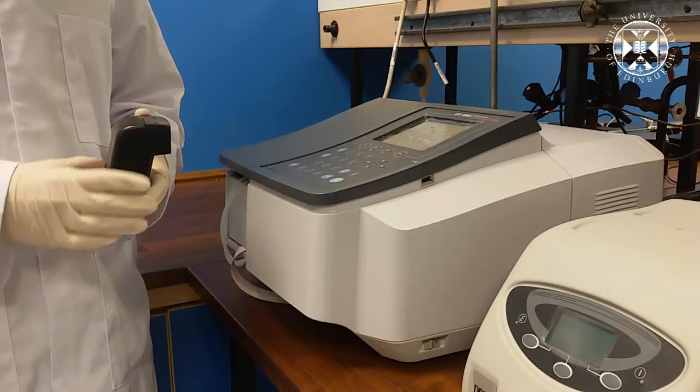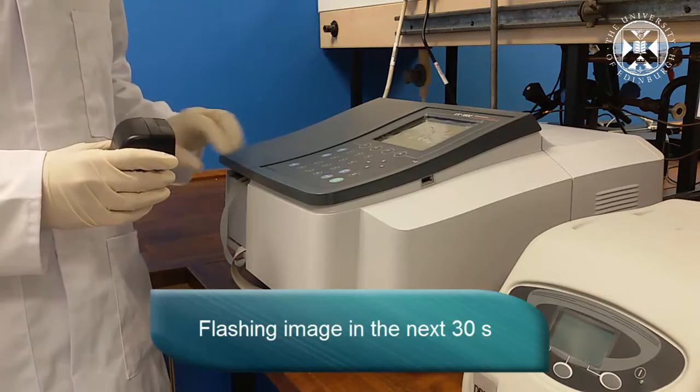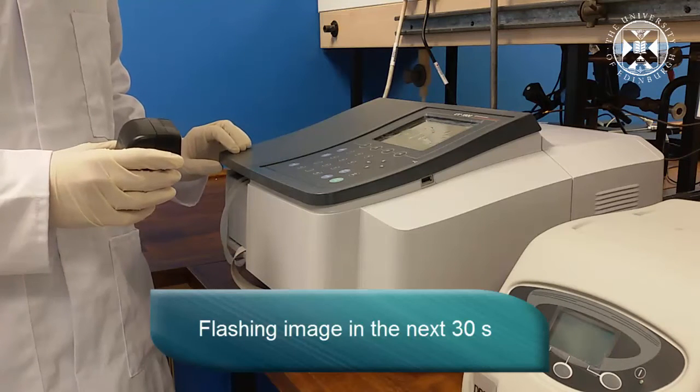When recording the spectrum in kinetics mode to determine the rate, we need to excite our sample from the trans-state to the cis-state. We do this using a camera flash like here.